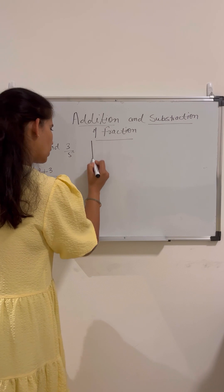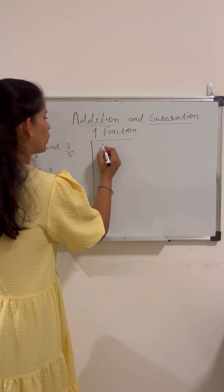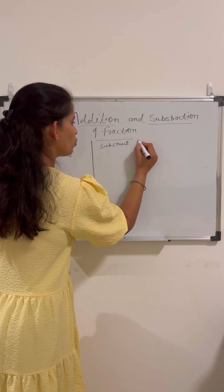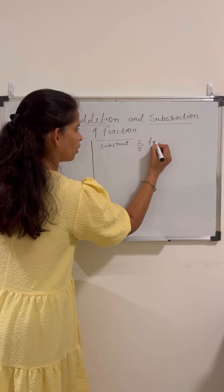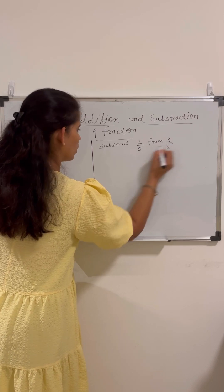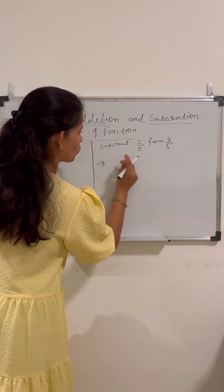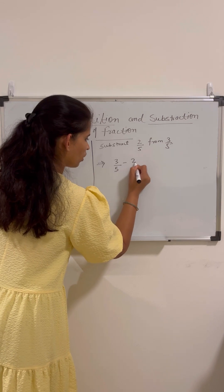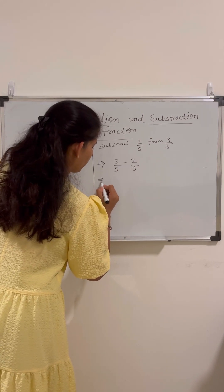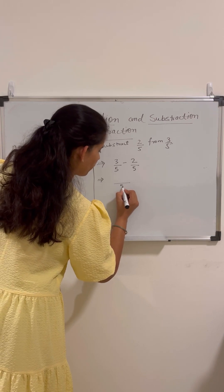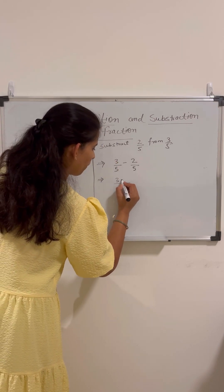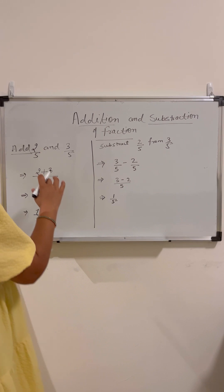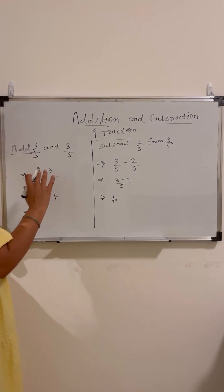Now let us take one more example. We need to subtract 2 by 5 from 3 by 5. So we will do 3 by 5 minus 2 by 5. The denominator is the same, so we keep the denominator as 5 and subtract the numerators: 3 minus 2 equals 1. The result is 1 by 5. This is the process to solve like fractions.